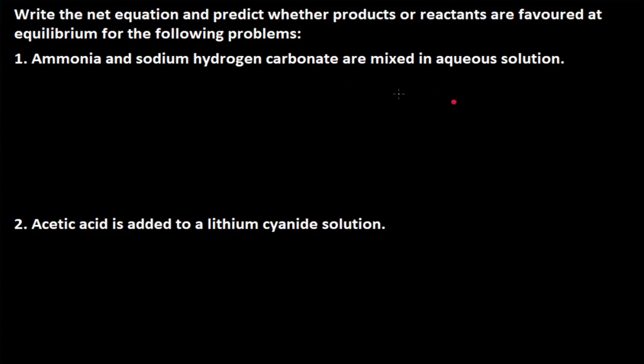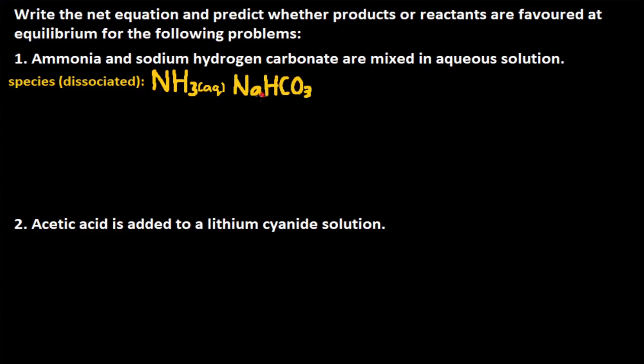Let's predict some Brønsted-Lowry acid-base reactions — we need to write the net equation and predict whether products or reactants are favored at equilibrium. For problem 1: ammonia and sodium hydrogen carbonate are mixed in an aqueous solution. First, we write the species in dissociated form. Ammonia is NH3 — it's a weak base so we leave it as is, because weak bases dissociate partially and we will mostly have NH3. It will be aqueous, not gas, since it's in an aqueous solution. Sodium hydrogen carbonate is NaHCO3⁻, an ionic compound, so we dissociate it into Na⁺ and HCO3⁻ ions. Since we have aqueous states, water is also a species.